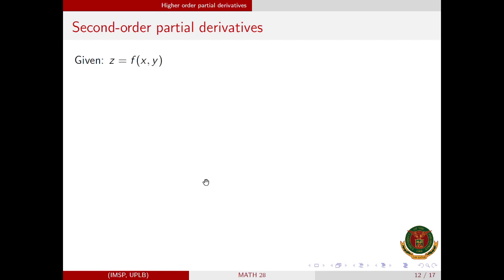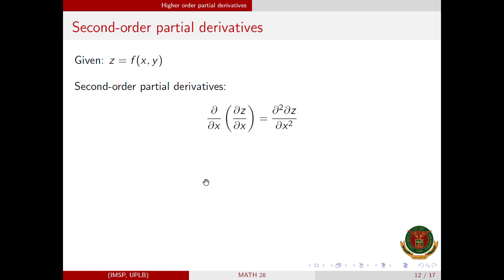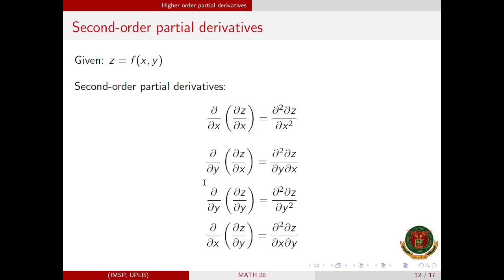Here are our notations for second-order partial derivatives. For the first two equations, this is the partial derivative of dz/dx. And for the last two equations, that is the partial derivative of the partial derivative of z with respect to y.